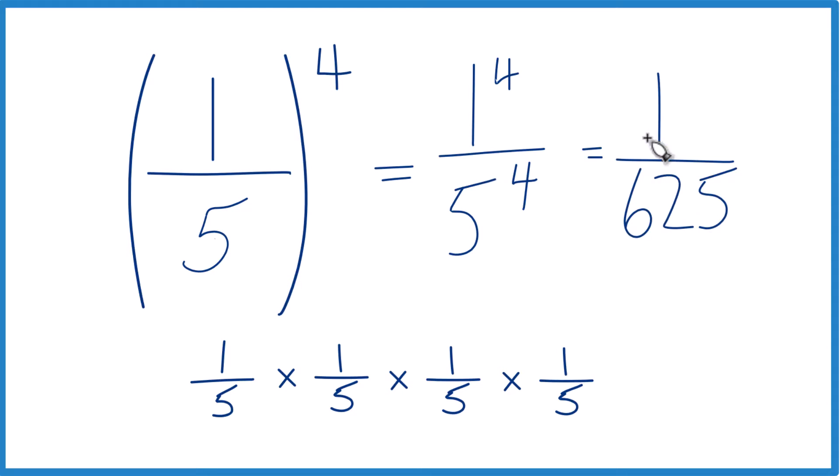One-fifth to the fourth equals the fraction of one over six hundred and twenty-five. That's it.